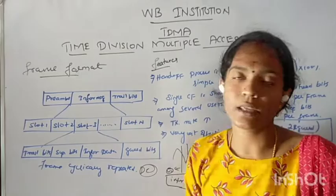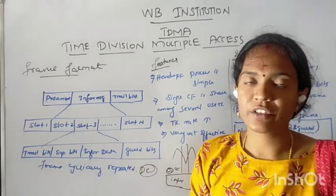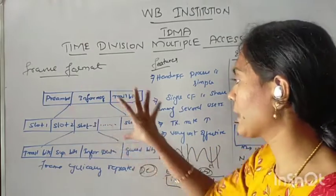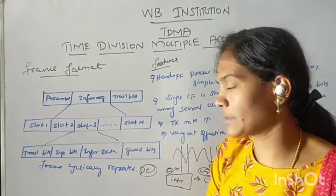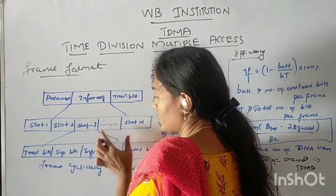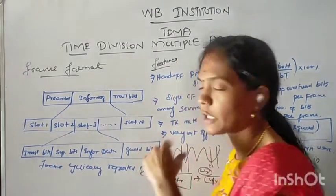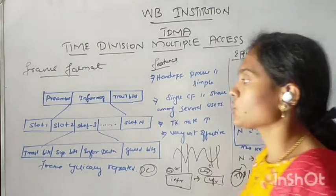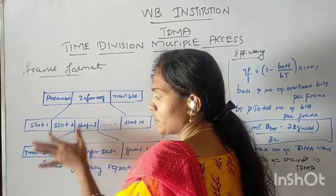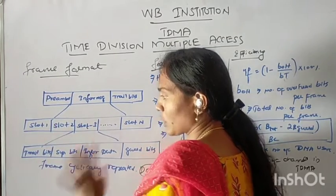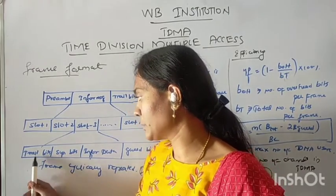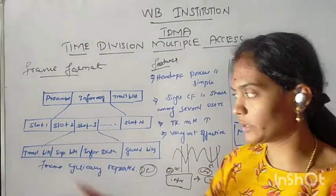The trial bits are used to raise the power levels and to control the mechanisms. In the information message, the time slots are: slot 1, slot 2, slot 3, up to slot 8. The time slot is divided. Each time slot is occupied by one user. Each time slot contains: trial bits, synchronization bits, information data, and guard bits.